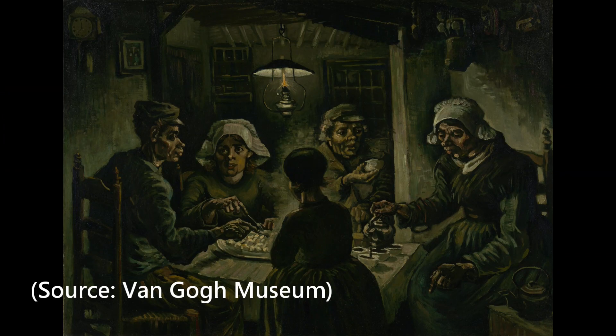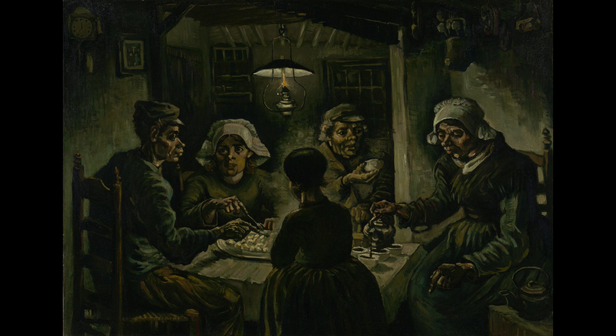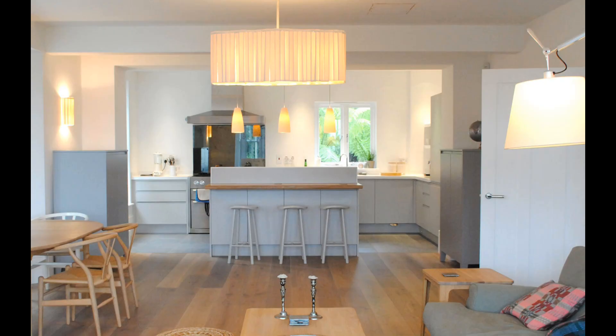Take a look at this painting by Vincent van Gogh for a second. It's called the Aardappel Eaters or the Potato Eaters. And count the number of light sources in the room. Van Gogh could easily see the shadows. Now take a look at this.